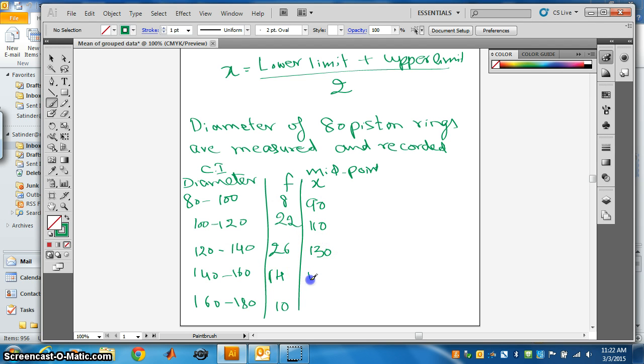Midpoint for the next one will be 130, 150. You can see the class size is 100 minus 80, which is 20. So find the first midpoint and keep on adding 20. 90 plus 20 is 110, 110 plus 20 is 130, 130 plus 20 is 150.